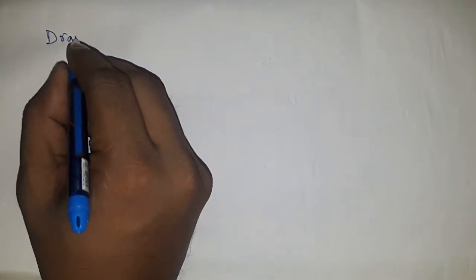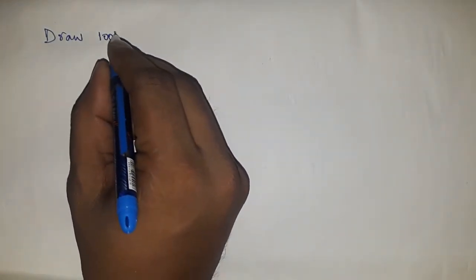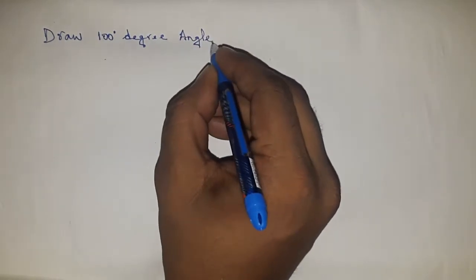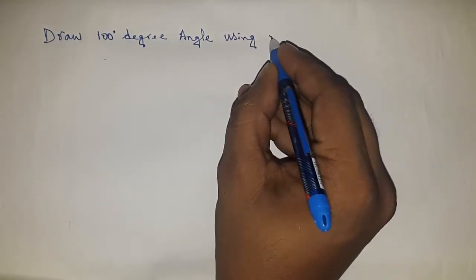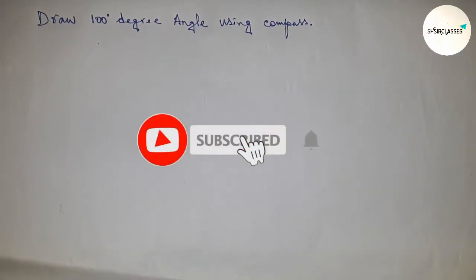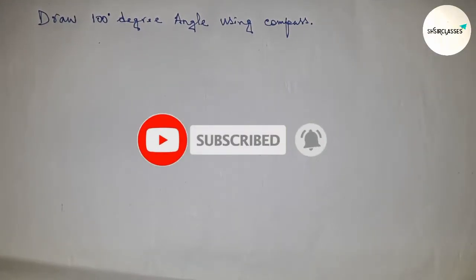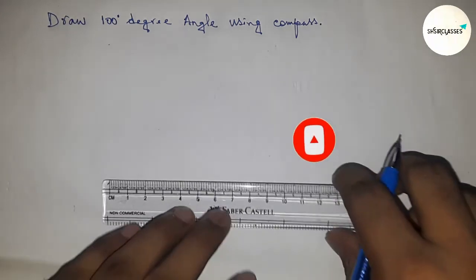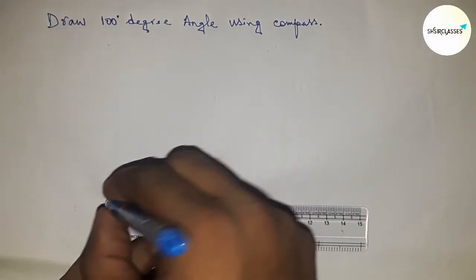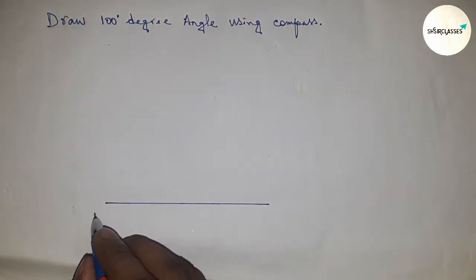Hi everyone, welcome to assessor classes. Today talking about the construction of a hundred degree angle by using compass. So today drawing a hundred degree angle by using compass. So before starting the video, as like every time, I have one request: please subscribe to the channel and press the bell icon.